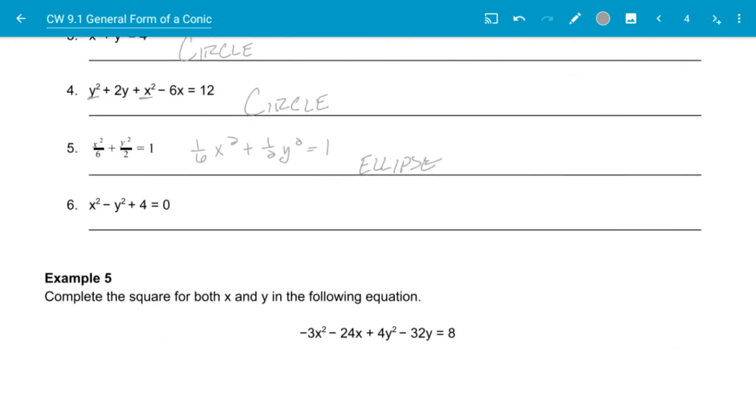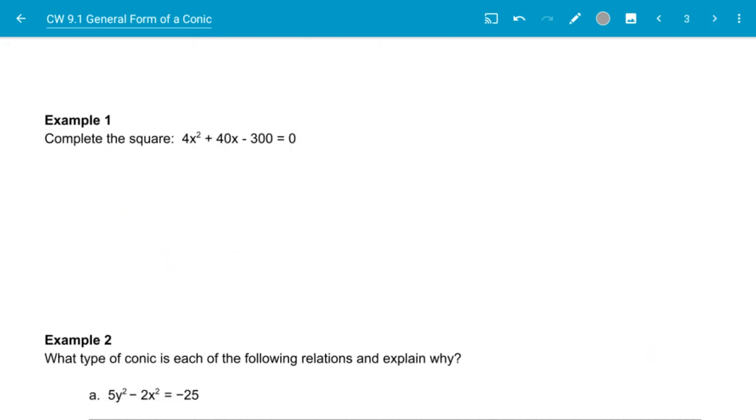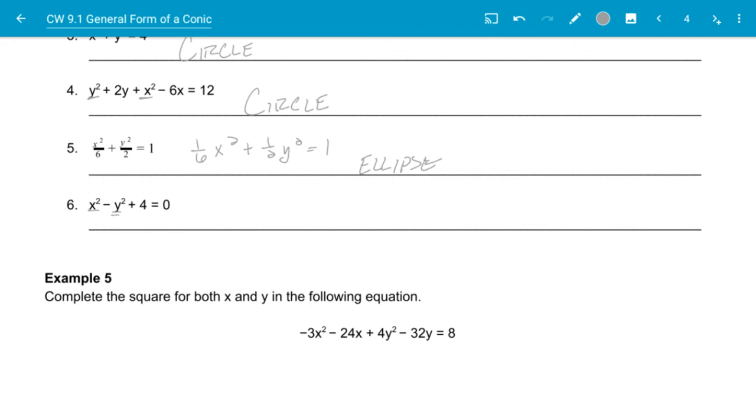Let's take a look at the last one here. I have x squared and y squared, but they have different signs on them. And if we review back over here, the different signs will give me a hyperbola to where my x squared and y squared have opposite signs. So my last one here is a hyperbola.